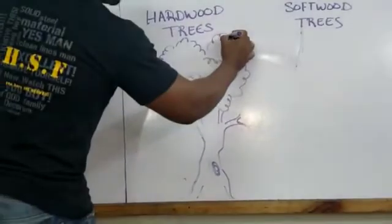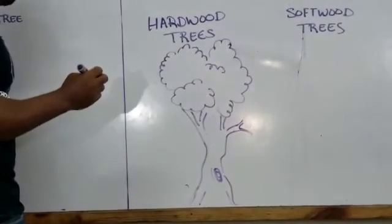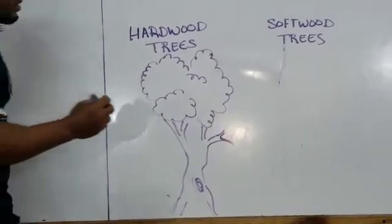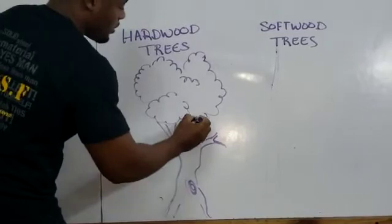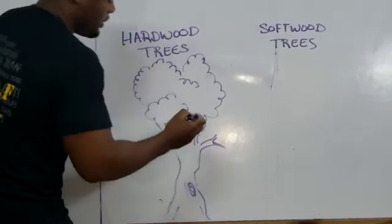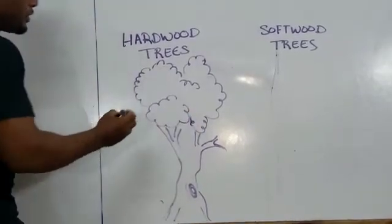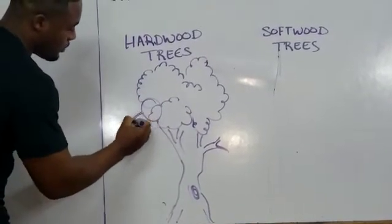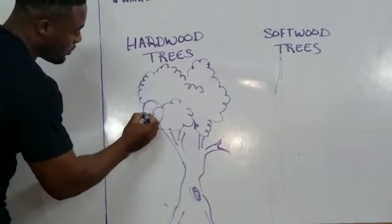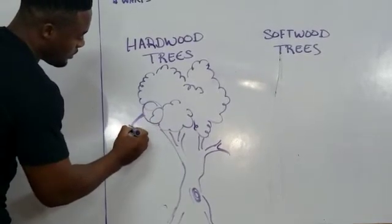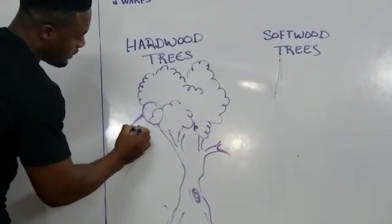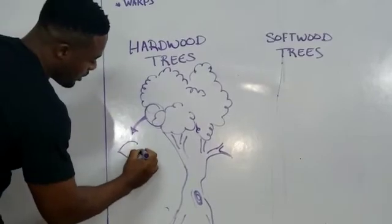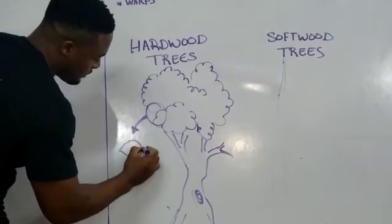When we look at the structure of the leaves of a hardwood tree, what you will notice is that these leaves are broader in size — much broader in size.